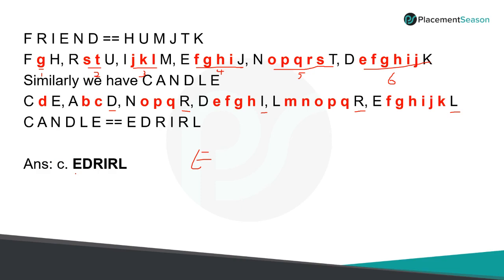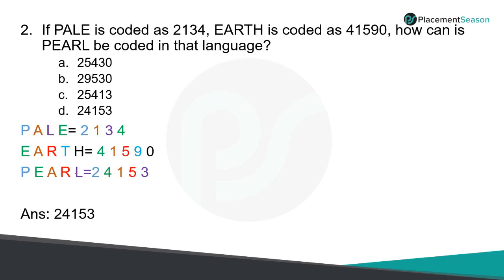So like this, it will have one particular logic flowing throughout the letters and you have to find what the logic is and apply it to the next. This is one form. It can also be in another form — for example, if PALE is coded as 2134 and EARTH is coded as 41590, how can PEARL be coded in that language? First, you write PALE with its coded number 2134, and EARTH with its coded number 41590.